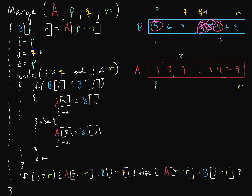Our next element is four. Is five less than or equal to four? Obviously not. So we need to copy four down, and we increment these indices. We are done with the four.